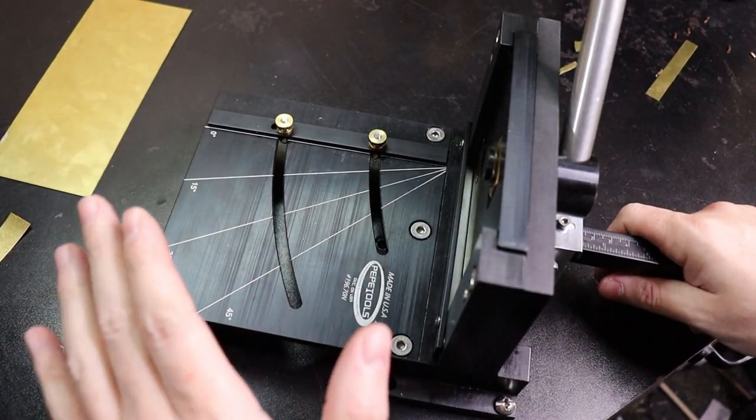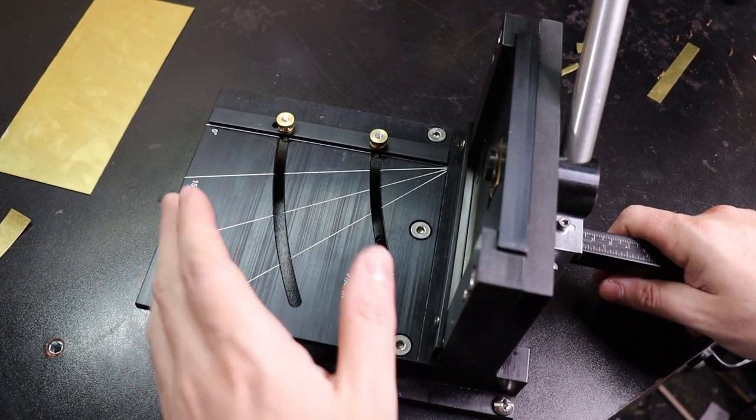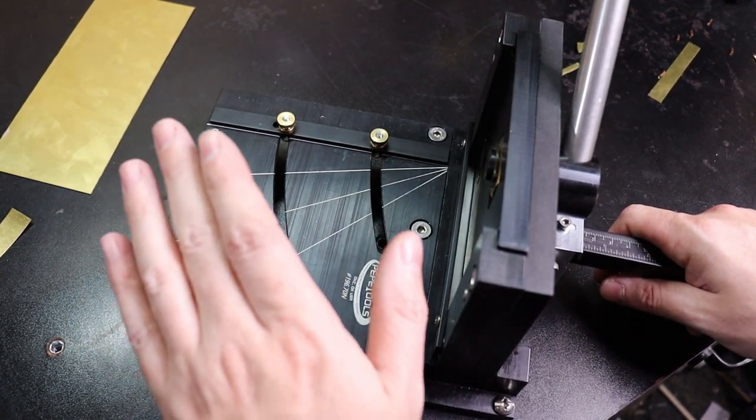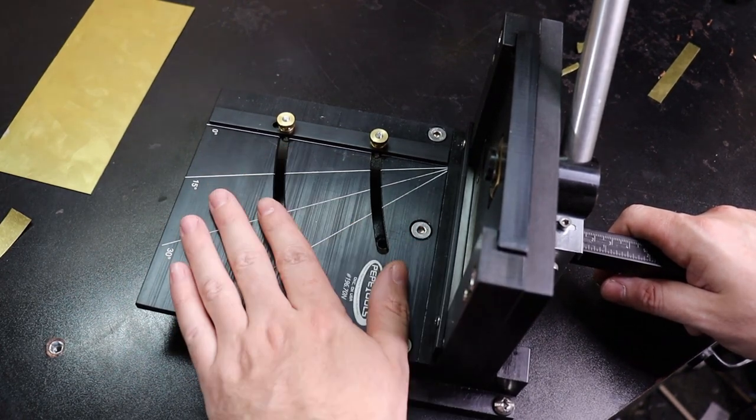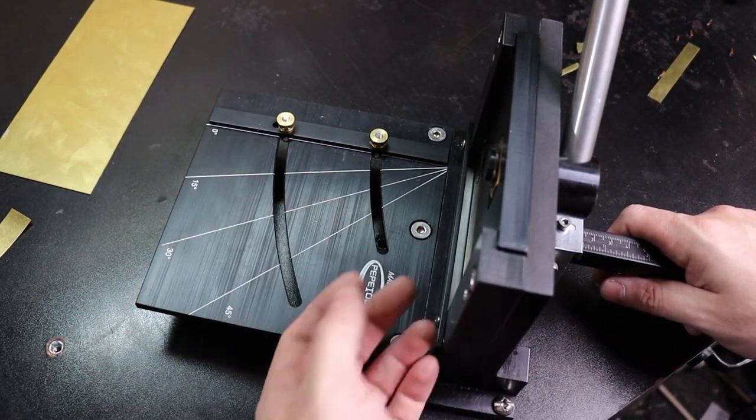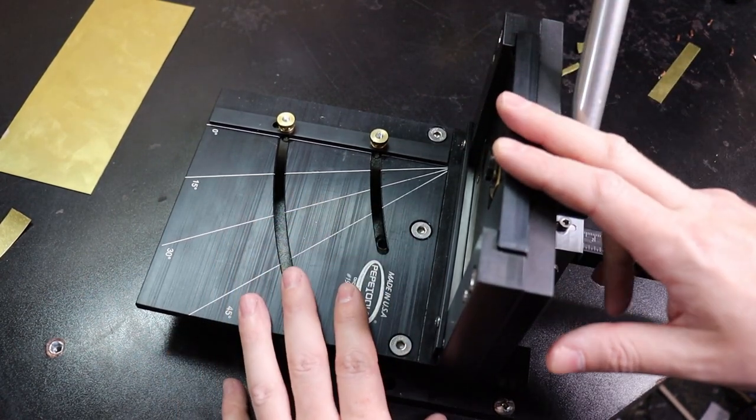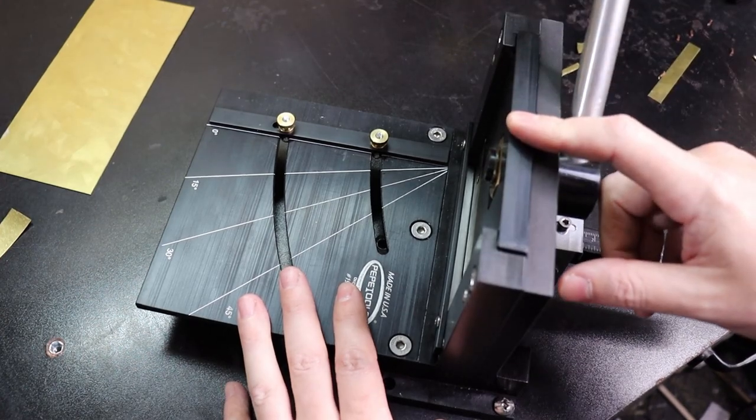And the last thing is you can use this to clean up any of your rolled out sheets of silver that you make or gold if you need them to be perfectly square or have angles in them. You can do that with this and clean them up to make them a lot easier to work with or have different edges to work off.